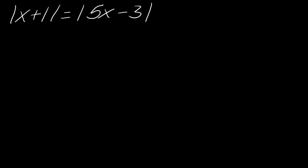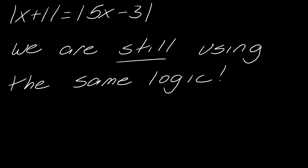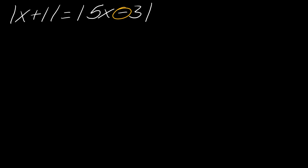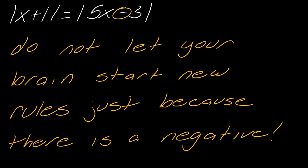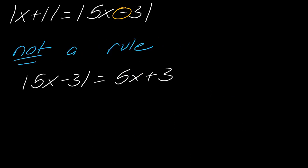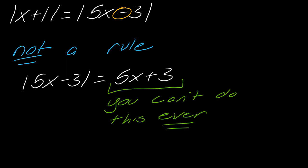Now let's make the problem slightly more complicated: the absolute value of X plus one equals the absolute value of five X minus three. This is where people's minds can play tricks on them. We are still using the same logic. A lot of people see that minus sign and let it throw them off. Do not let your brain start creating new rules just because there is a negative. You might think you need to make something positive — but that is creating a rule that doesn't exist.